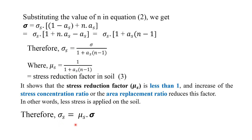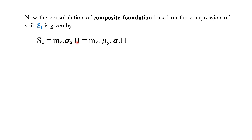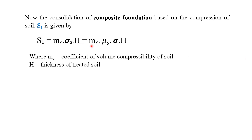The consolidation settlement of the composite foundation based on compression of soil S1 is given by: S1 = Mv × sigma_s × H, where Mv is the coefficient of volume compressibility of soil, sigma_s = mu_s × sigma is the stress on the soil, and H is the thickness of the treated soil.